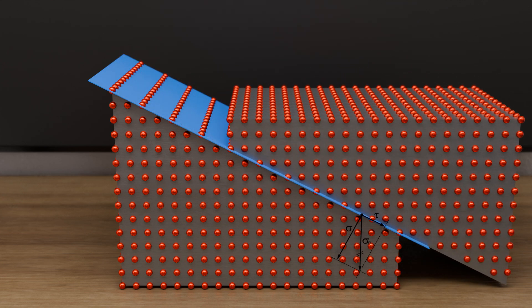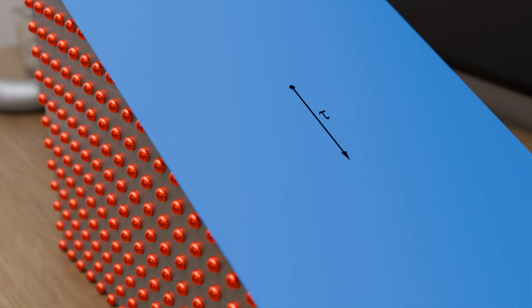To initiate a deformation process, certain critical resolved shear stresses must be exceeded in the slip planes, and especially in slip direction, so that shearing of the atomic planes occurs. Due to the bonding forces acting between the atoms, it is theoretically possible to predict at what critical shear stress this occurs. For metals, these values are typically between 1000 and 3000 newtons per square millimetre. Remarkably, in reality only a fraction of this stress is needed to actually plastically deform a material. The experimental values are in the single-digit range between 1 and 30 newtons per square millimetre — deformation already starts at much lower stress values than theoretically calculated.